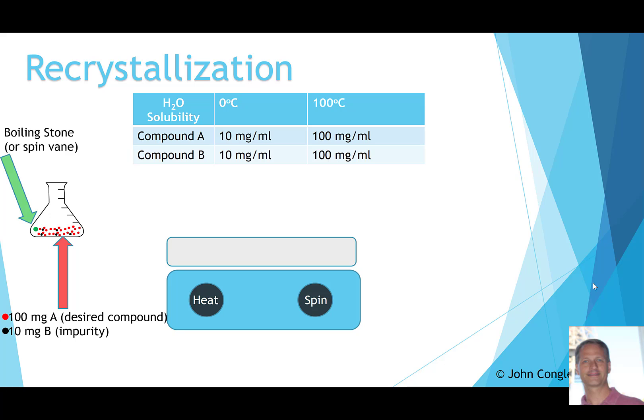We have an Erlenmeyer flask, which we typically use for recrystallization. In it, we have a mixture of 100 milligrams of compound A — the compound we're trying to purify — and 10 milligrams of an impurity, compound B. Before starting, we need to add a boiling stone or spin vane and pre-wet it with about a quarter milliliter of solvent so we don't risk melting our solute by placing it on the hot plate without any solvent.